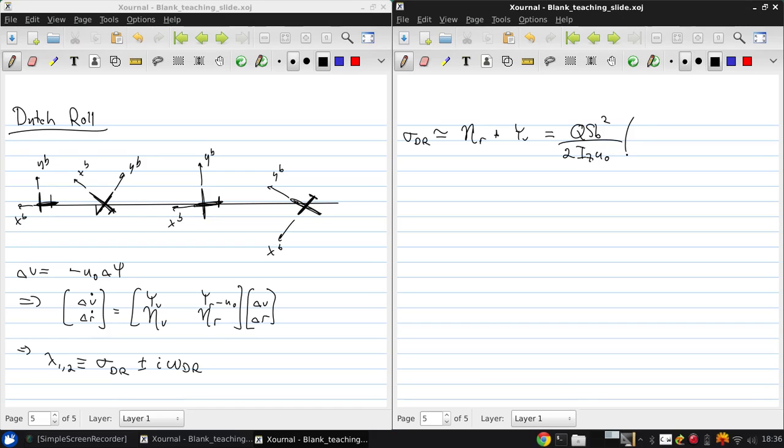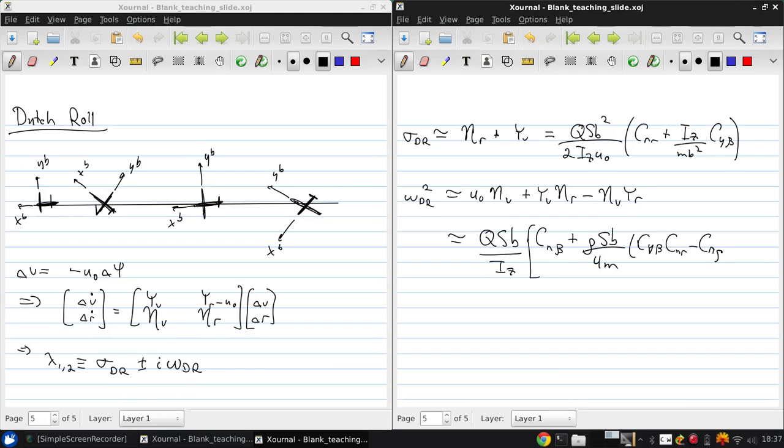And this can be approximately expressed as (qSb)/Iᵤ times Cₙᵣ + (ρSb)/(4m) times Cᵧᵦ·Cₙᵣ - Cₙᵦ·Cᵧᵣ.